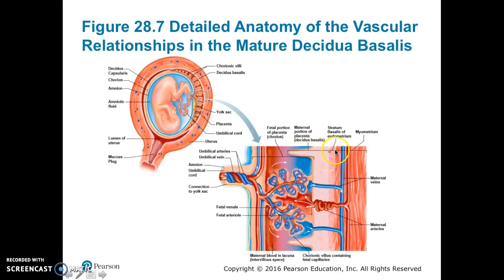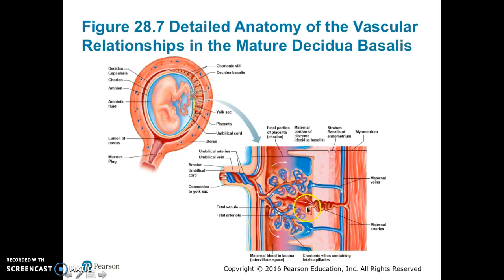The stratum basalis of the endometrium is here, and the myometrium lies beyond it. The maternal veins are shown in blue and the maternal arteries in red. Maternal blood comes up and enters this blood-filled space, then exits toward the venule or vein. So you have all this maternal blood coming in, while these are the fetal veins and arteries running through the chorionic villi.